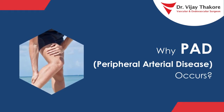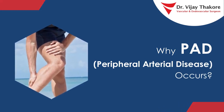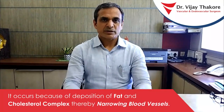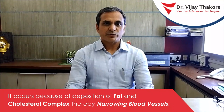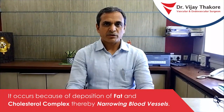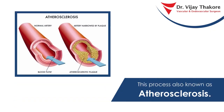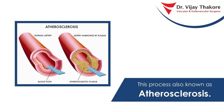Why does peripheral arterial disease occur? Peripheral arterial disease is the narrowing or occlusion of blood vessels. It occurs because of a deposition of fat and cholesterol complex, thereby narrowing blood vessels. This process is also known as atherosclerosis.